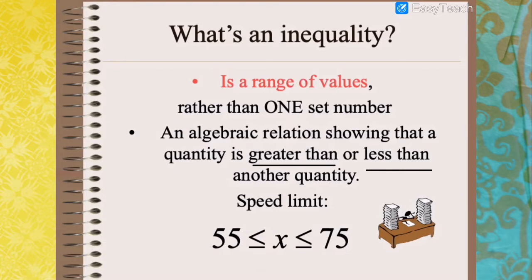For example, the speed limit, represented by x, should be between 55 and 75. That means the speed limit should not go lower than 55 or greater than 75. So any values between 55 and 75 could be your speed limit. That is inequality — it's a range of values.